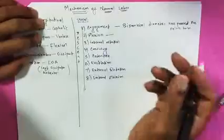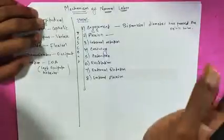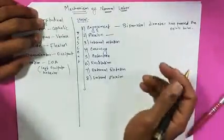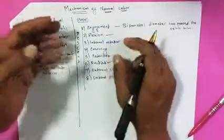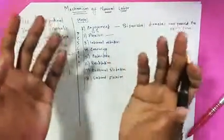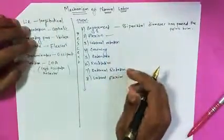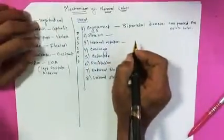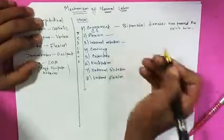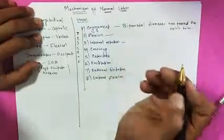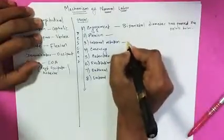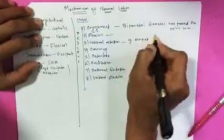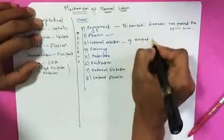Flexion is achieved due to the resistance offered by the cervix, wall of the pelvis, and pelvic floor. Due to this resistance, there is flexion of the head. And then is internal rotation — in internal rotation, what happens is there is internal rotation of the occiput anteriorly.